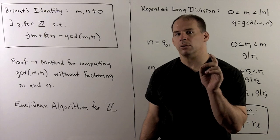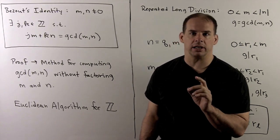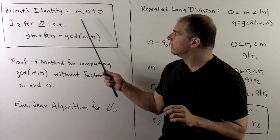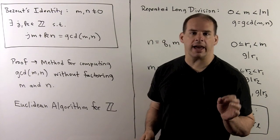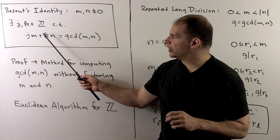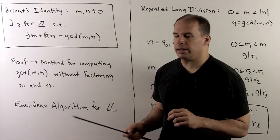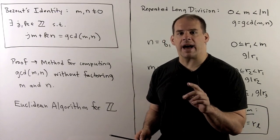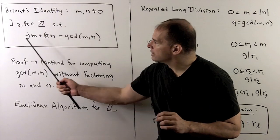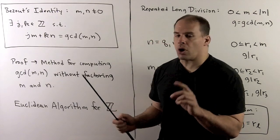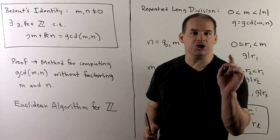Recall from last time, we stated and proved Bézout's identity. If m and n are non-zero integers, then there exist integers j and k such that j times m plus k times n is equal to the greatest common divisor of m and n. Now, the statement of the identity offers no help in how to find j and k.